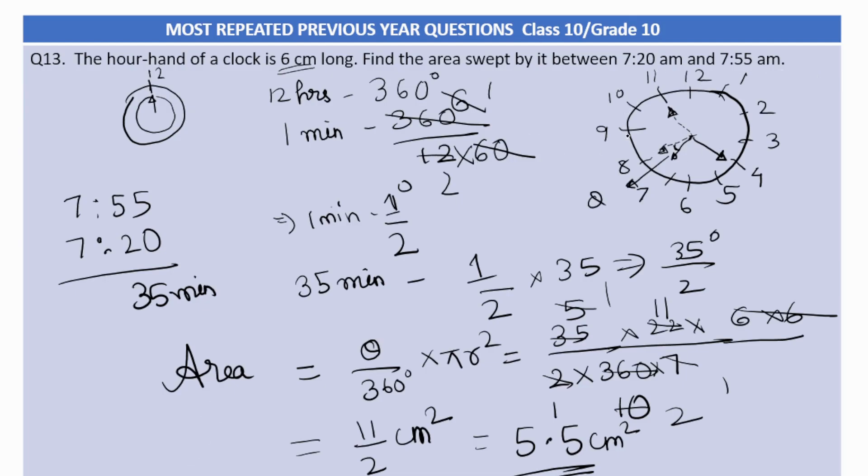So just first find out the angle that it swept between the initial time and the final time. Then find the area using the area of a sector formula theta by 360 into pi r square. We have found theta value that is 35 by 2. Simply substitute the value, put the radius 6 centimeter and find out the area. This is a very simple question we should not make any mistakes while calculation.